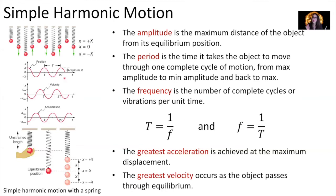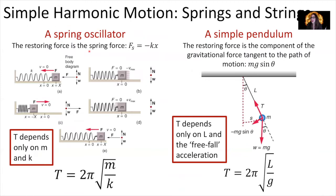As our object executes simple harmonic motion, it is going to have its greatest acceleration at its maximum displacement, and it's going to have its greatest velocity as the object passes through its equilibrium point. Let's talk about this greatest acceleration and greatest velocity with a different graphic.